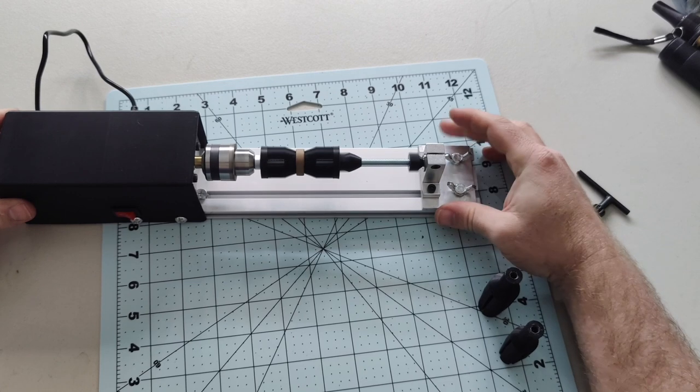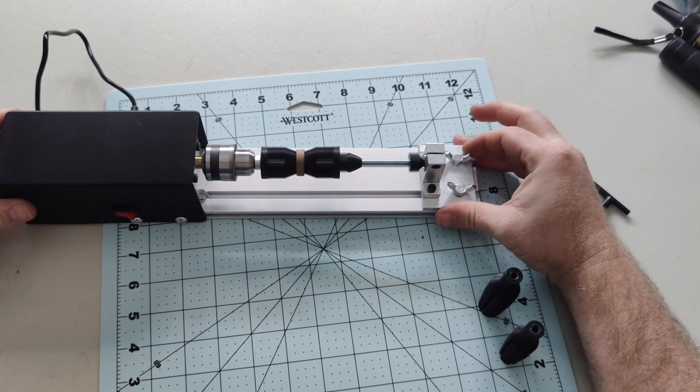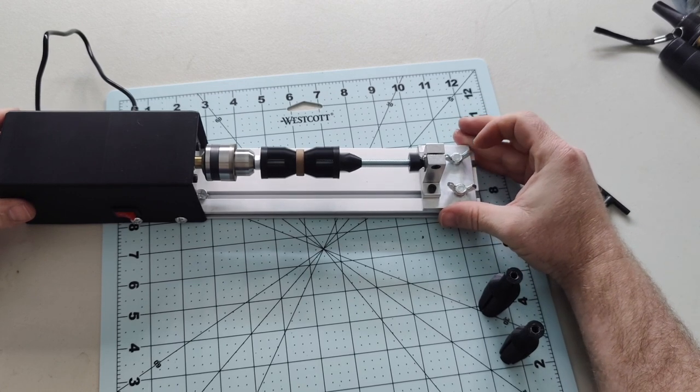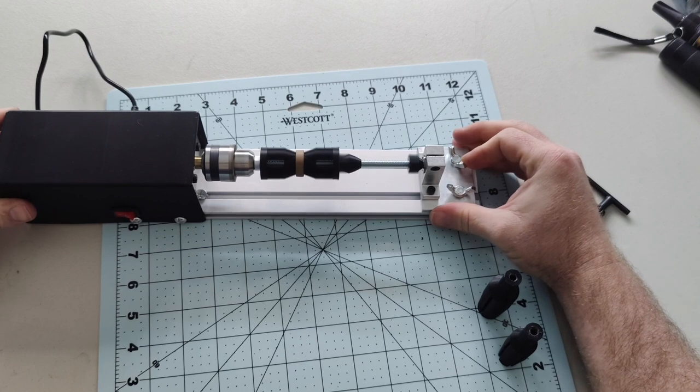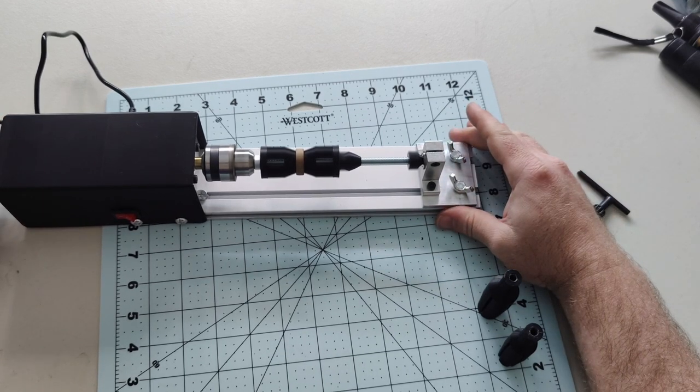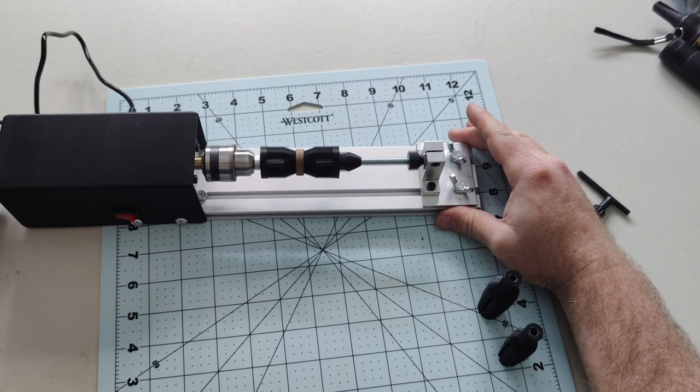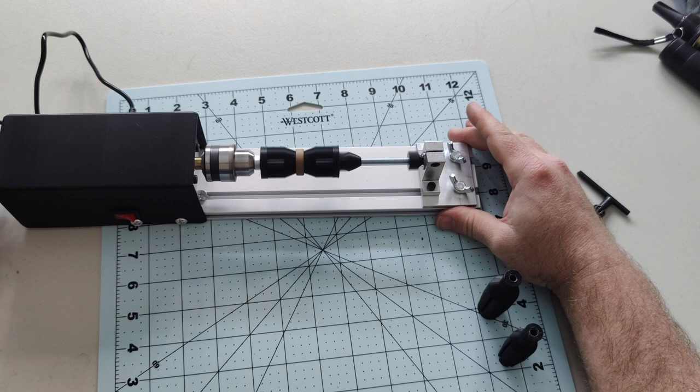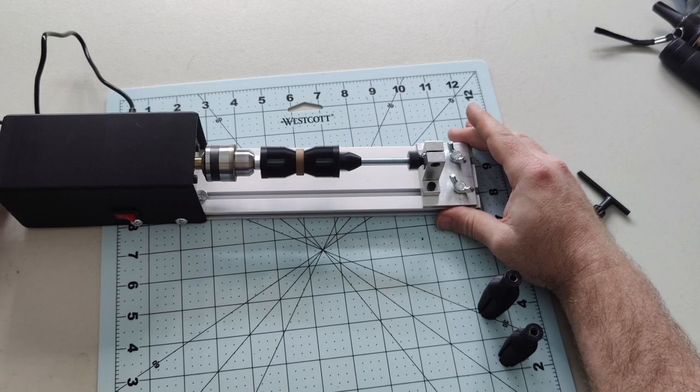If the lathe is running a little rough here, kind of like you're seeing, you just have to adjust the tailstock. It's that way with this new tailstock attachment as well as the old one. So if you're running into issues, just fiddle with it and find the place where it sounds like it's running the best.